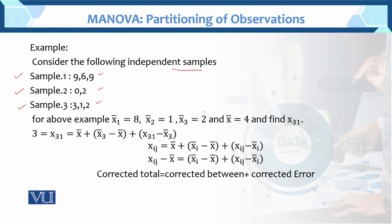The overall mean is called x̄. For this example, we need to find x₃₁ — x₃₁ means the first observation of the third sample. The third sample's first observation is 3, so x₃₁ = 3.